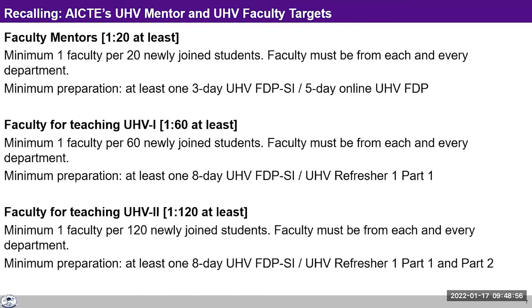For teaching UHV-1, the ratio is one to sixty, again from every department. There is no special department for teaching universal human values — this is very important. The minimum preparation is at least one eight-day face-to-face FTP, which is still available but not being run as frequently. The other option is the UHV Refresher Part One, which is a five-day online program, and that is for preparing faculty for teaching UHV-1.